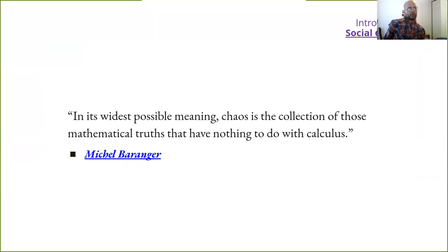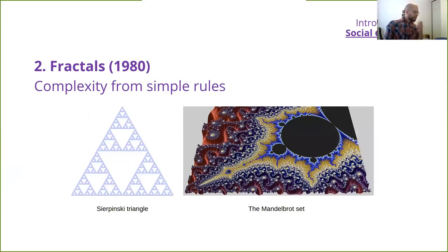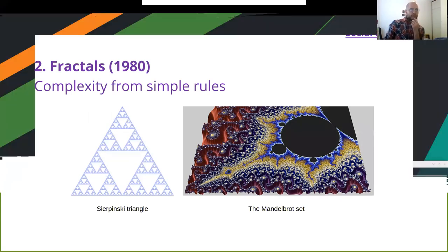There was a very big trust in calculus and analysis after physics' early 20th century success, and then chaos theory broke some holes into this. Michel Baranger has an interesting paper stating that in its widest possible meaning, chaos is considered a collection of those mathematical truths that have nothing to do with predictability. During this same period, ideas about self-similarity emerged.